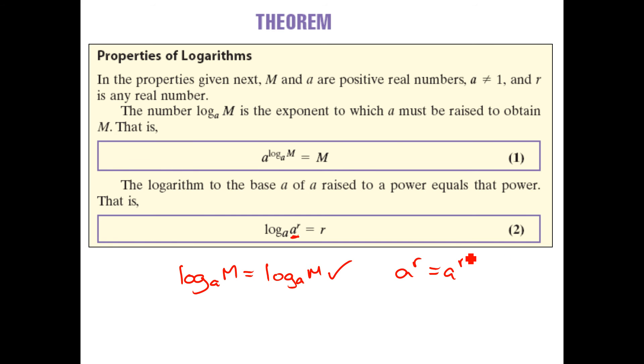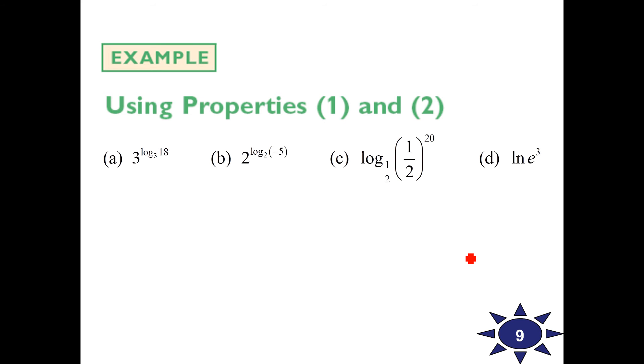But what do we use them for? We're going to be able to use them to cancel things out. In this case, 3 to the log 3 of 18 just equals 18. The 3 and the log 3 cancel out. Now you'd be tempted on part B to say that the answer here is negative 5, but we know that for logarithms, the parent function, the domain is x has got to be greater than 0. Can you do the log of a negative number? No. So this is no solution. Can't be done.